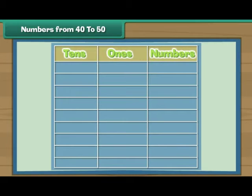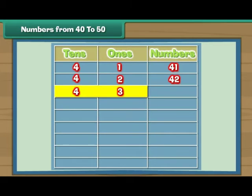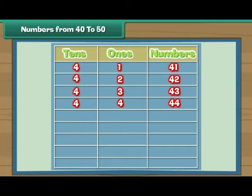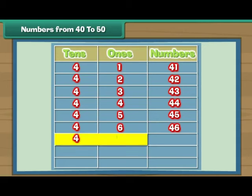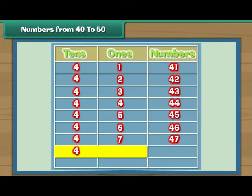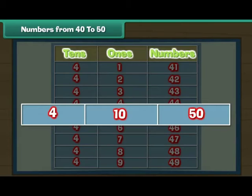Let us now complete this table. Four tens and one give 41. Four tens and two give 42. Four tens and three give 43. Four tens and four give 44. Four tens and five is 45. Four tens and six is 46. Four tens and seven is 47. Four tens and eight is 48. Four tens and nine is 49. Four tens and ten give five tens — that is 50.